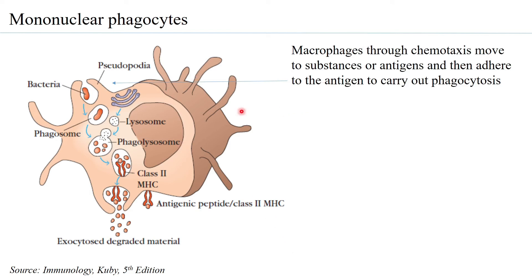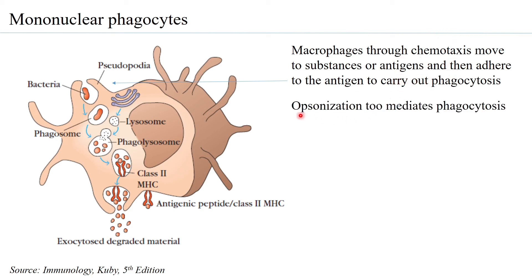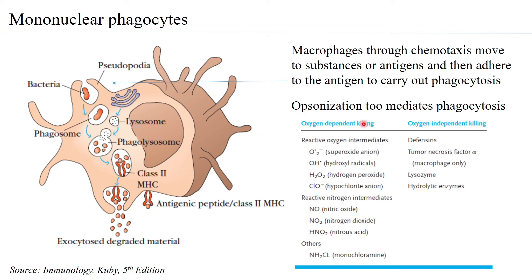Macrophages move towards a particular bacterium or foreign particle based on what is called chemotaxis — attraction towards a particular chemical. They adhere to the antigen based on chemotaxis, and through opsonization they mediate phagocytosis. If antibodies are bound to antigens, the antibody makes the antigen more palatable, binds to the macrophage, and initiates phagocytosis.